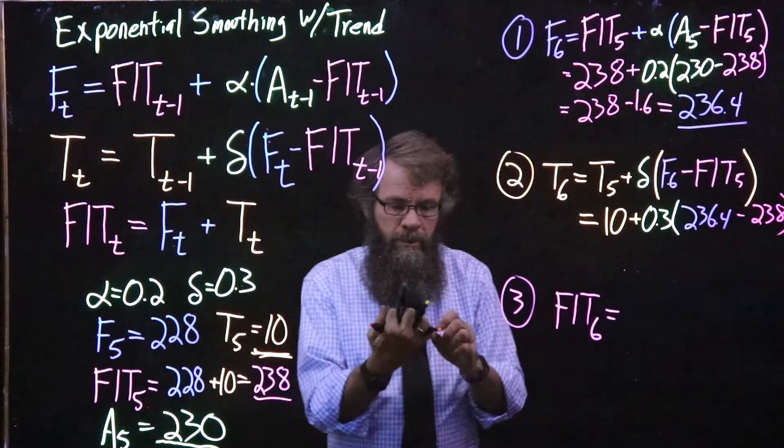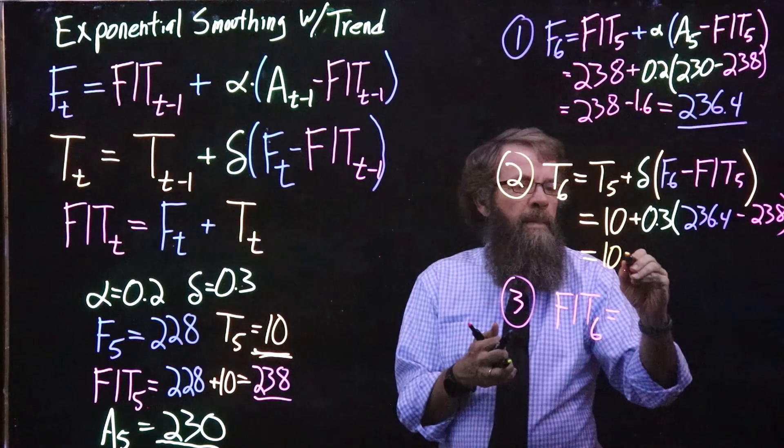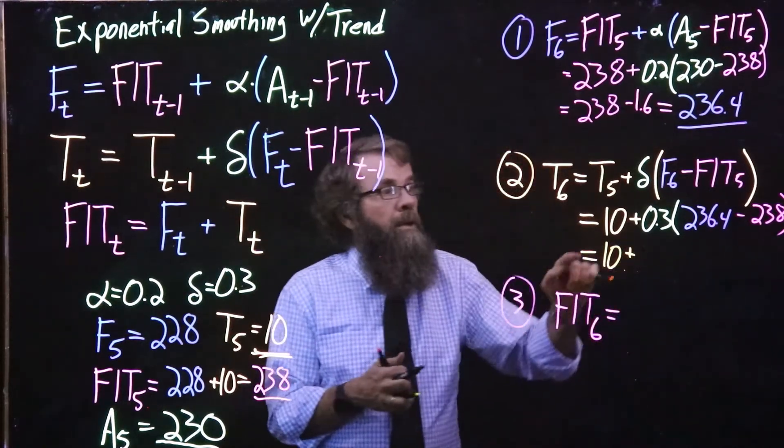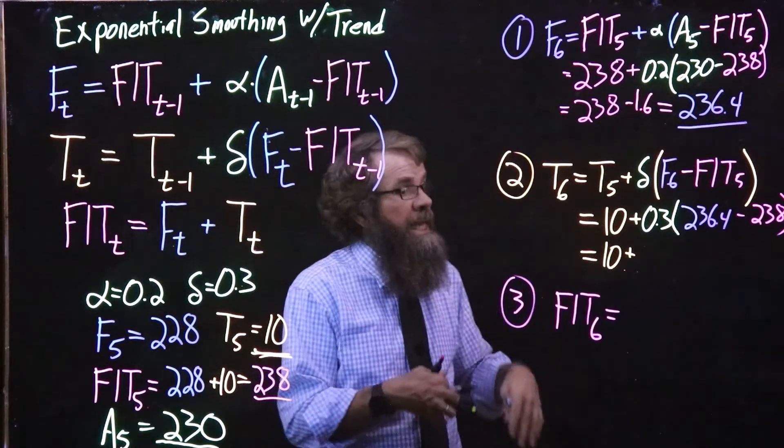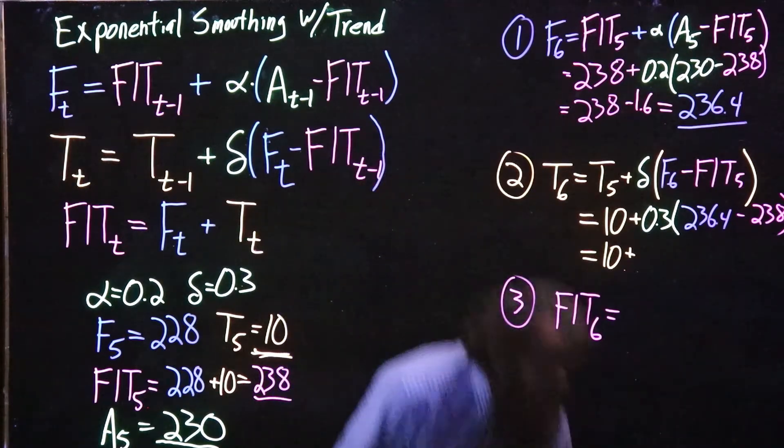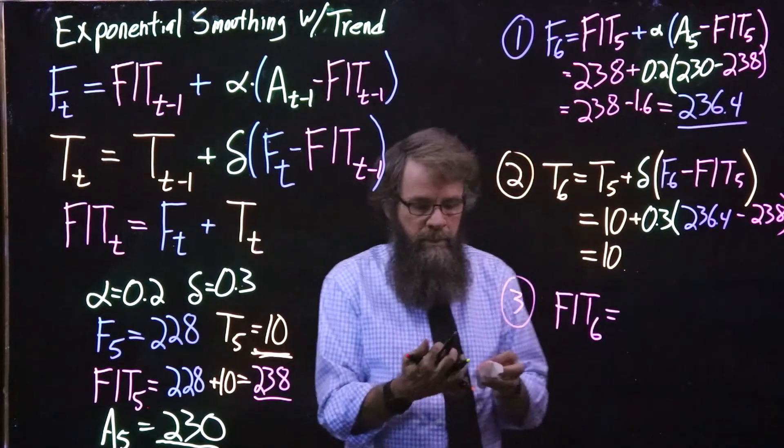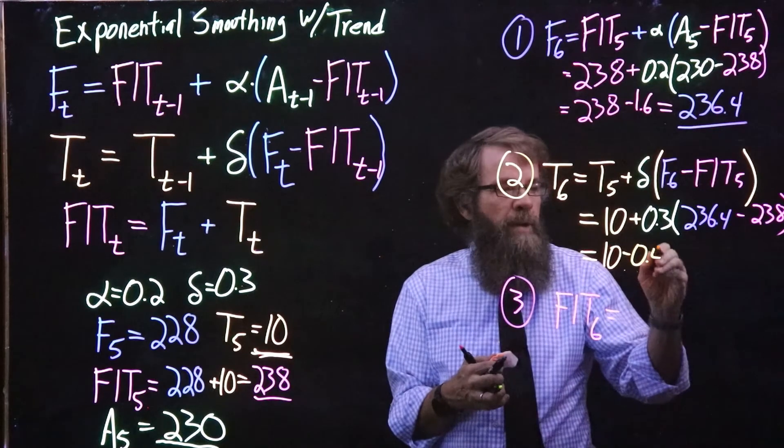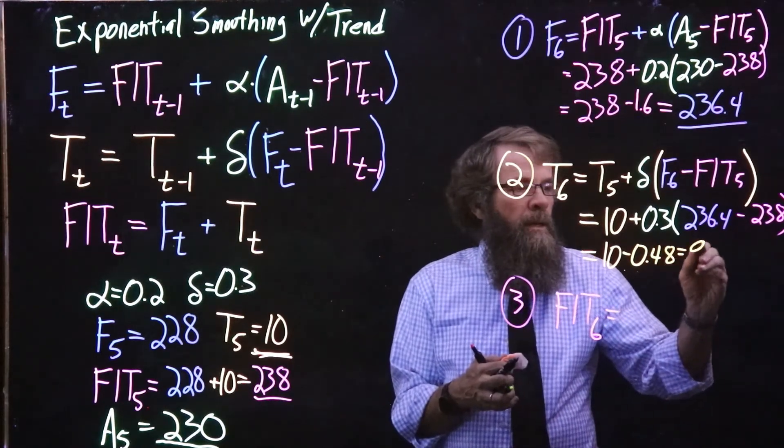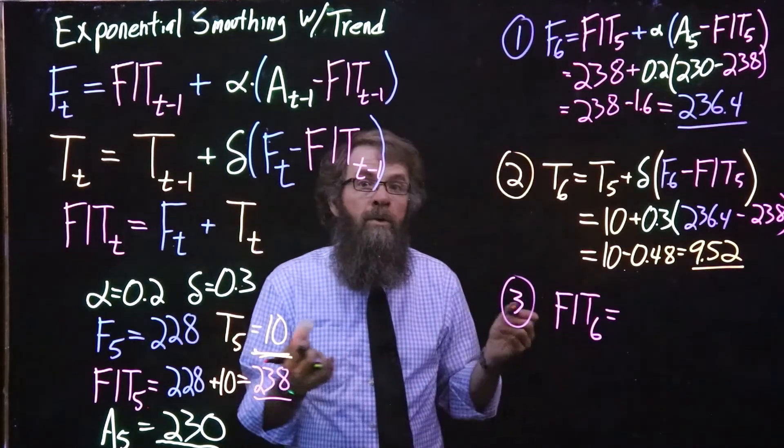So our new trend is 10 plus, and now we have 236.4 minus 238, so that is negative 1.6. Negative 1.6 times 0.3 is 0.48, so we're going to subtract off 0.48, so we have 9.52 as our new estimate of the trend.